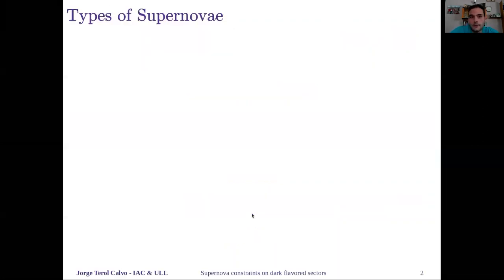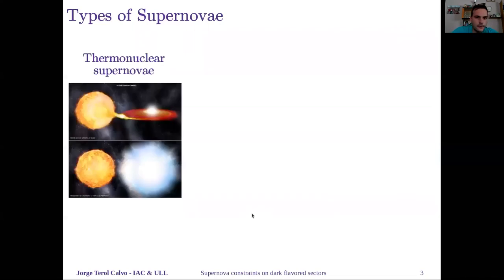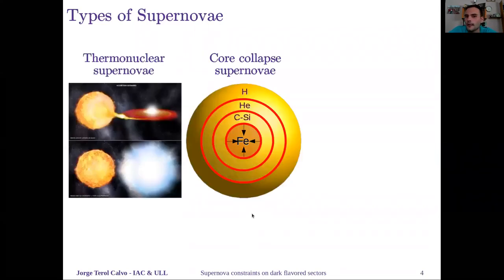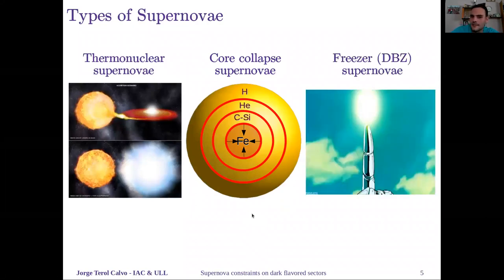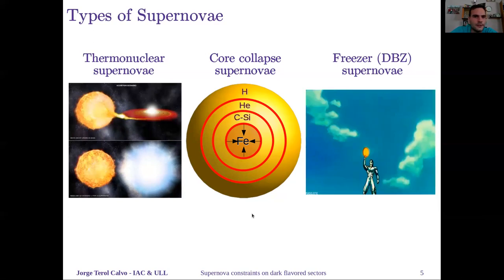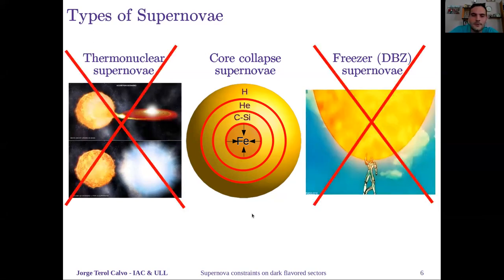There are several types of supernovae. One of them is the thermonuclear supernovae, another is the core collapse supernovae, and there's a third one which is the attack from Freezer from Dragon Ball Z. But in this talk, I'm going to talk about core collapse supernovae.